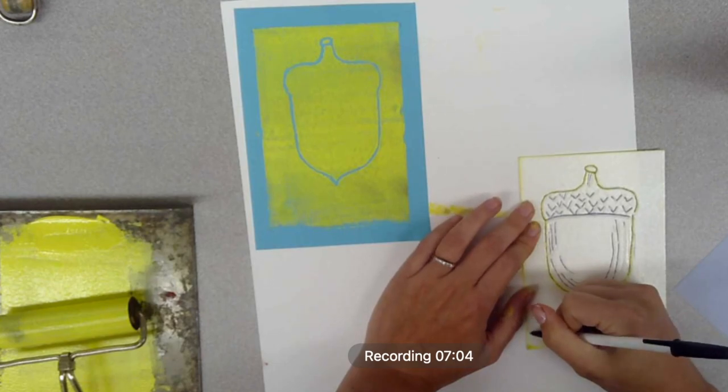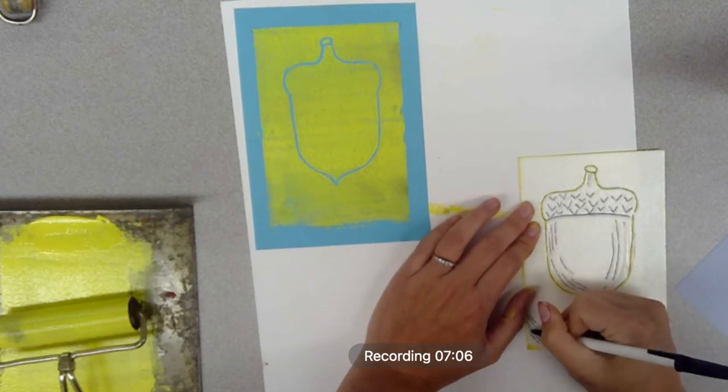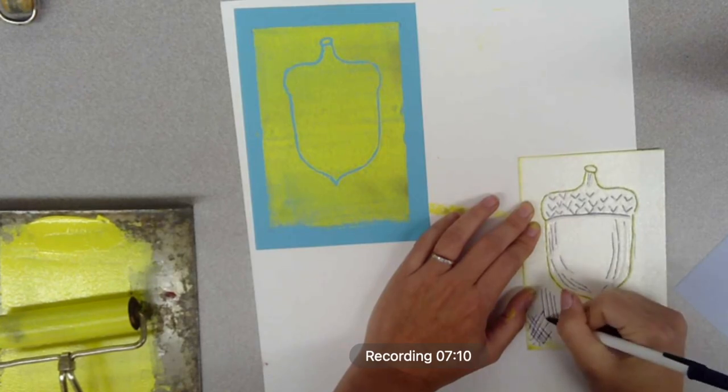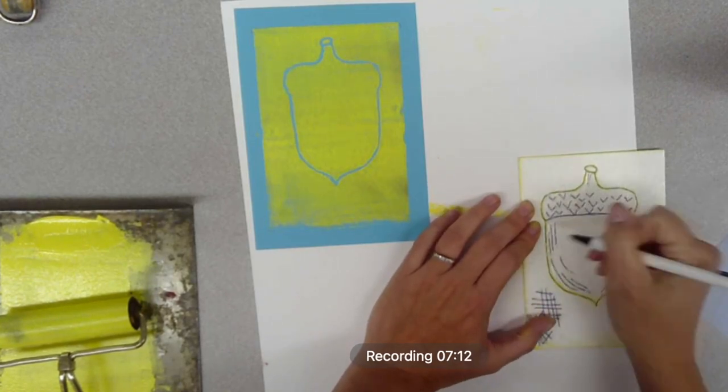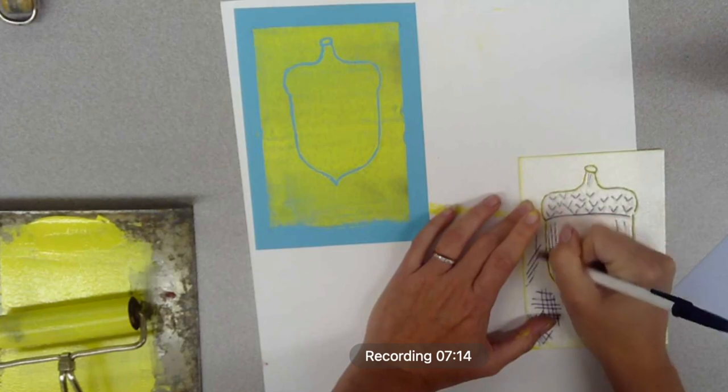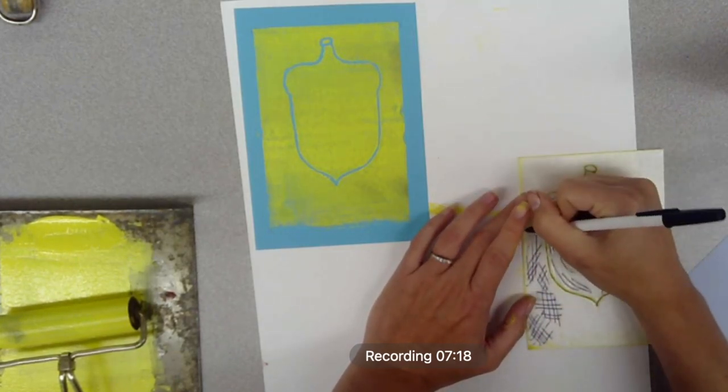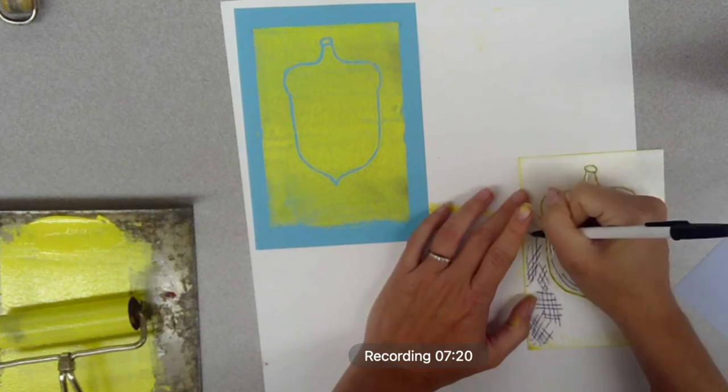I'm also creating some designs in my background space. For this design I decided to do kind of hashtag cross-hatching marks all over the place and that's going to be my background. You can choose how you want to design that background space.